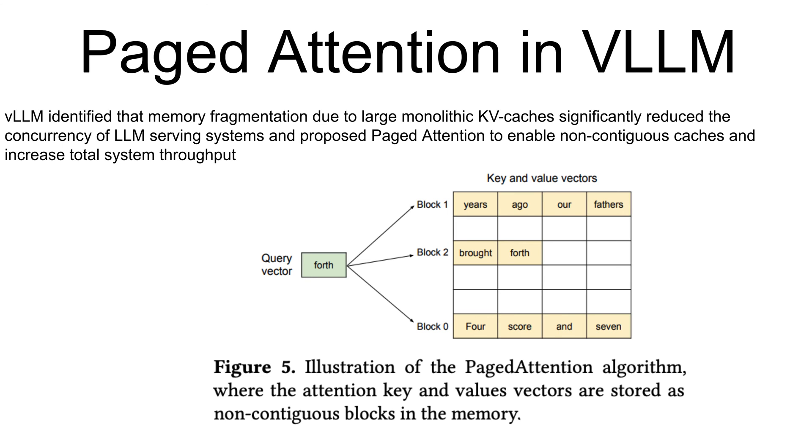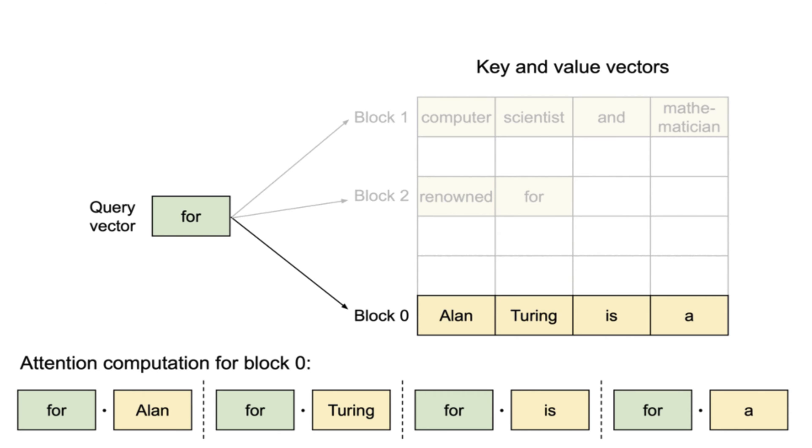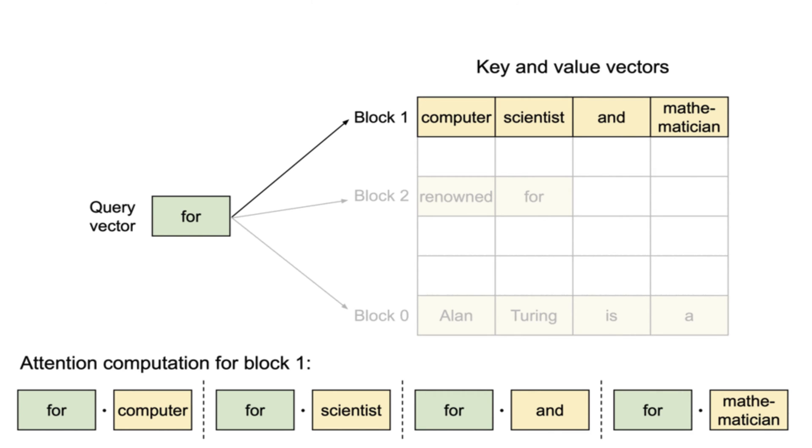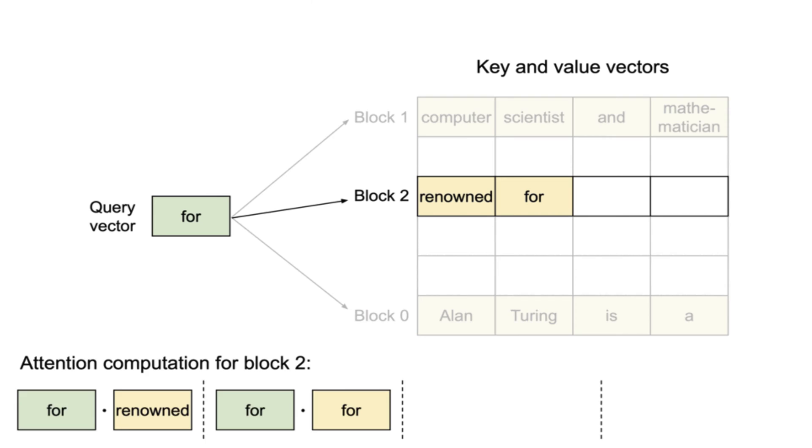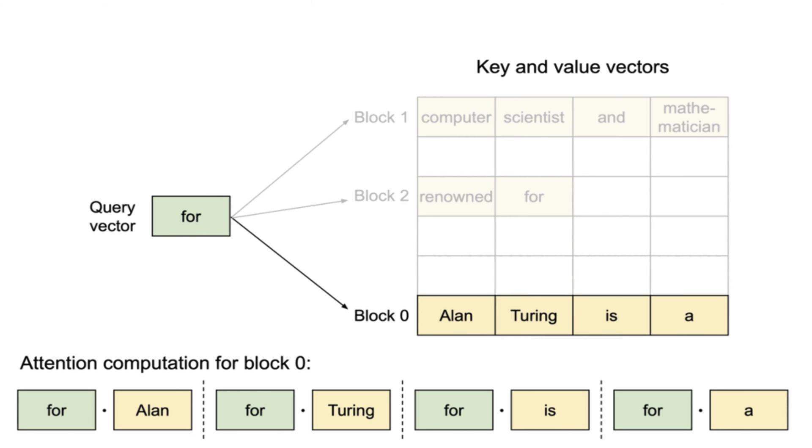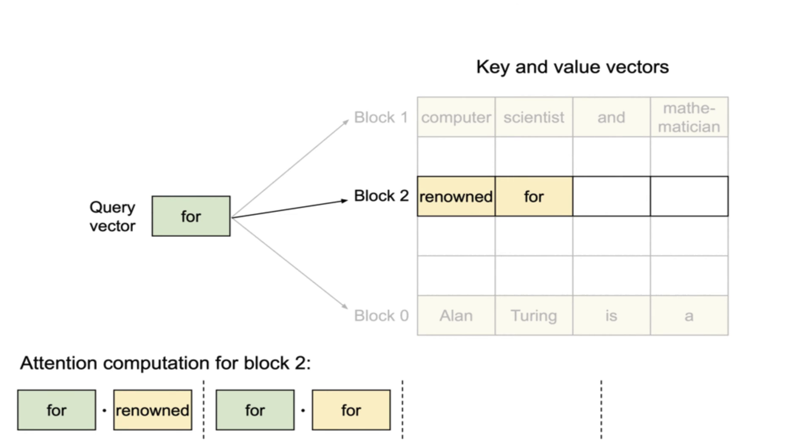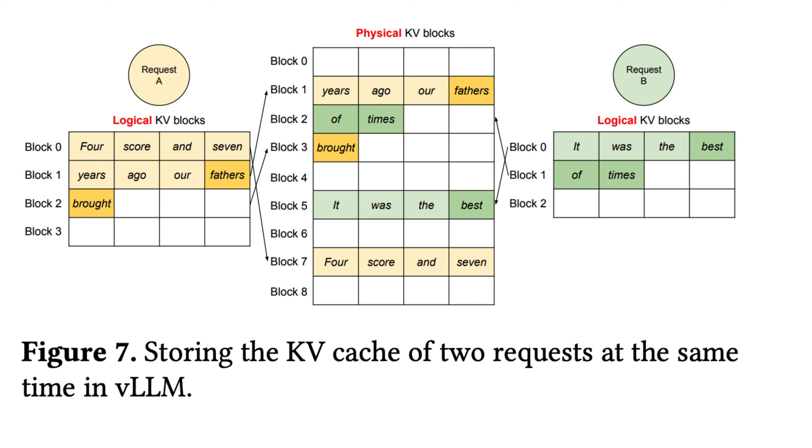You can see this example - the attention computation for block zero, then block two, then block zero, then block one, then block two. This is a very good example showing you how things are working here. I'll give you guys a minute to go through this diagram because it's very important. This is the whole concept of KV cache of two requests at the same time in vLLM.